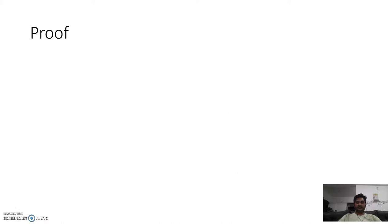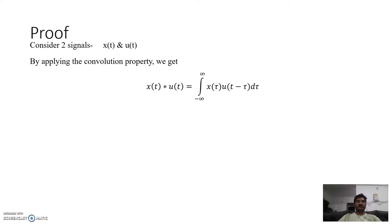Let's see the proof of this. Consider two signals x(t) and u(t). If we apply the convolution property to this, we get x(t) convolution u(t) equals the integral from minus infinity to infinity of x(τ)u(t - τ) dτ.